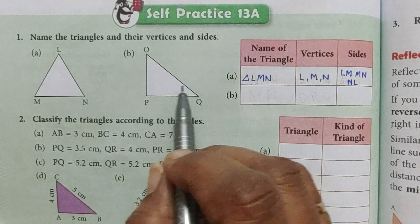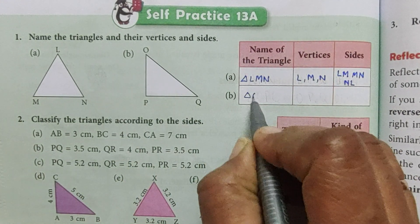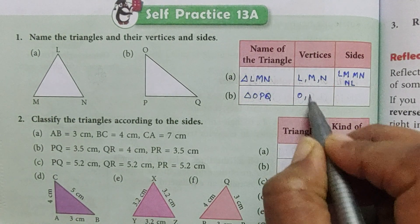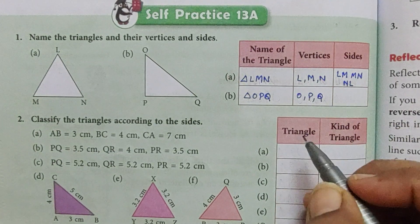In part B, the name of the triangle is triangle OPQ. Vertices are O, P, and Q, and the sides are OP, PQ, and OQ.